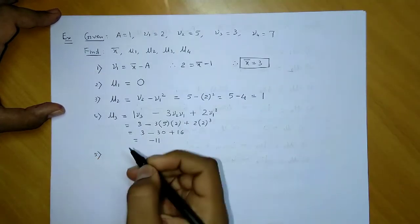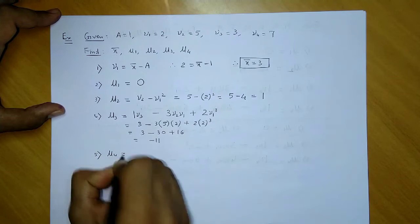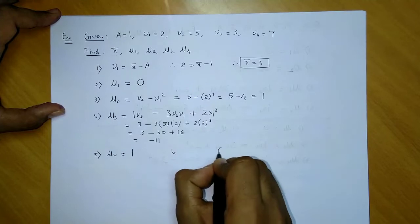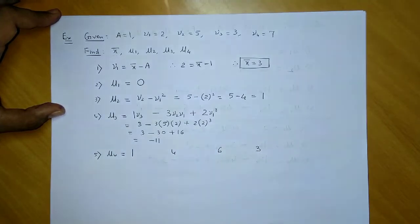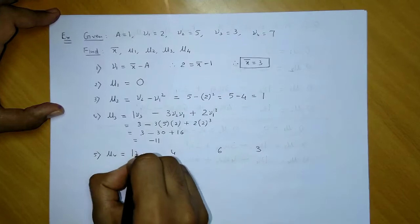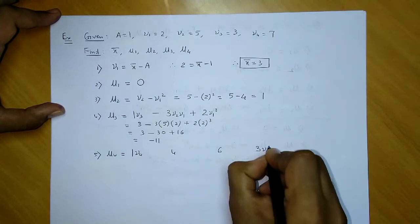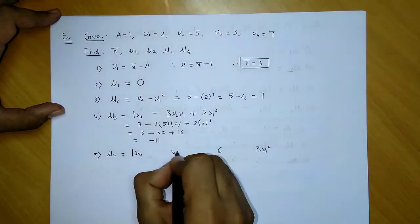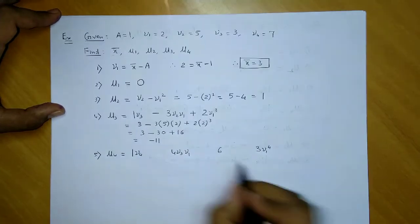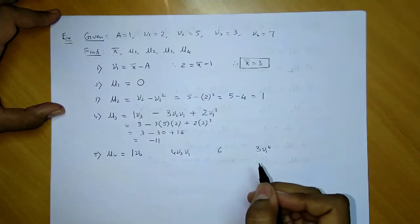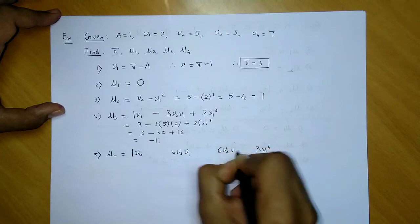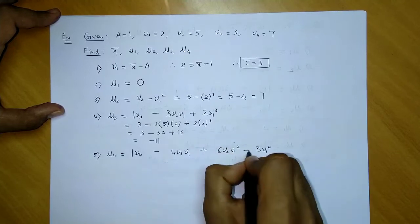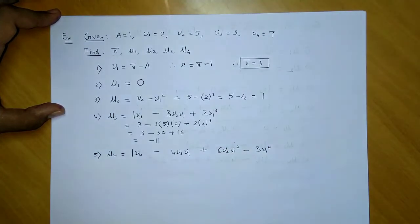Now last we have to find μ4. μ4's coefficients are 1, 4, 6, and 3. It starts with v4, ends with v1⁴, and with 4 you have v3v1, with 6 you have v2v1². The signs are minus, plus, minus.